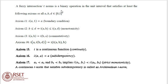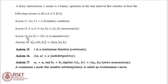A fuzzy intersection, generally known as T-norm, is a binary operation on the unit interval that satisfies at least the following axioms for all A, B, D element of the closed interval [0,1]. Axiom I1: I(A,1) = A, known as the boundary condition. Axiom I2: B less than or equal to D implies I(A,B) less than or equal to I(A,D), called the monotonicity property. Axiom I4: I(A, I(B,D)) = I(I(A,B), D), called the associative property.